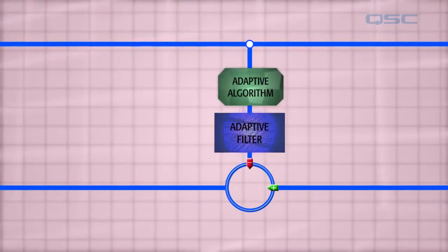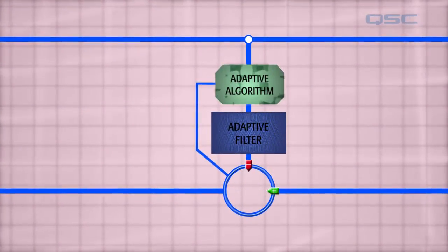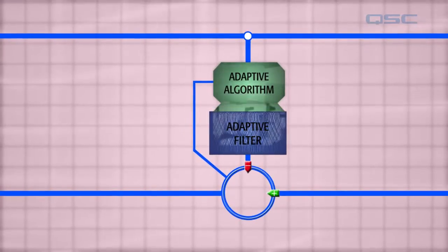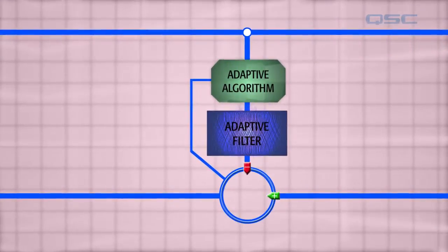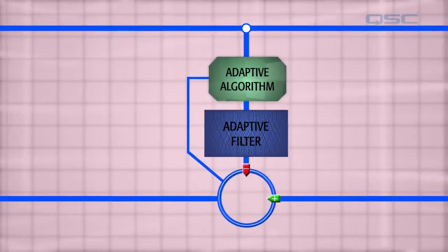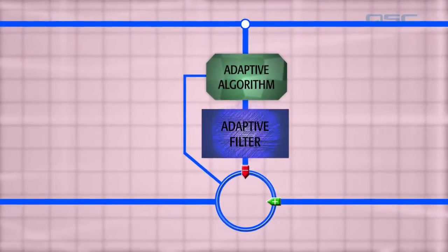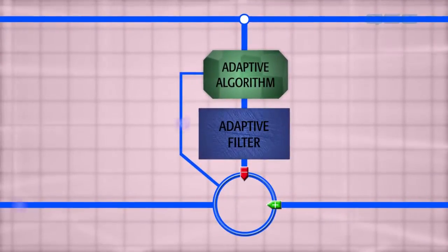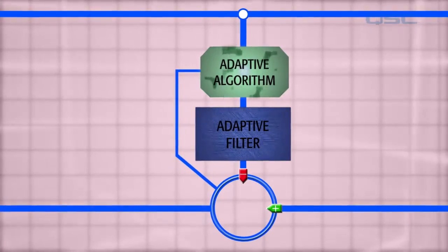Instead, the adaptive algorithm is used to constantly update the filter by monitoring the result of the subtraction operation, and then adjusting the filter until the result is as close to zero or silence as possible. This adaptive algorithm is always at work, trying to keep the filter converged with the dynamic room impulse response.